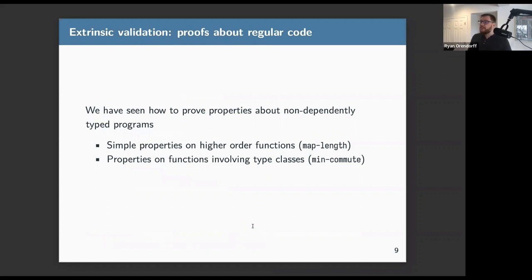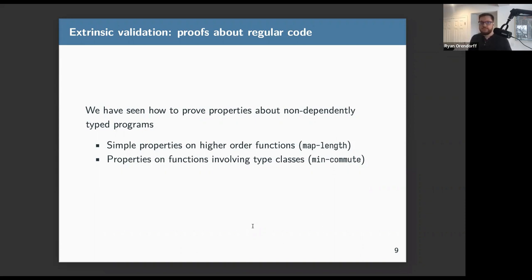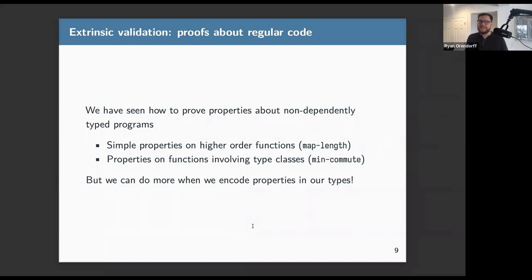Extrinsic validation involves proofs about what we might call regular code. We've seen two ways to do this: proving properties about higher-order functions like map-length, and proving properties about functions involving type classes like min-commute. But we can do more when we encode properties directly in our types — that leads us to intrinsic verification.